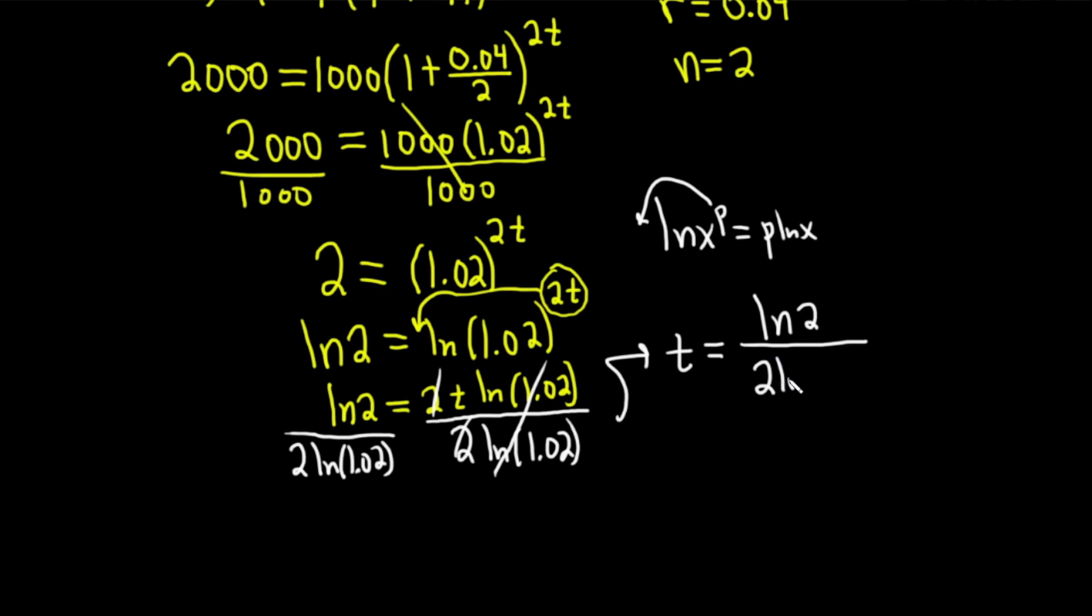T is equal to the natural log of 2 all over 2 ln 1.02. So this is the time it's going to take for our money to double at 4% compounded twice a year. In other words, semi-annually. Put this in your calculator, it's roughly 17.5 years. If you have $1,000 at 4% compounded semi-annually, in 17.5 years, you will double your money.